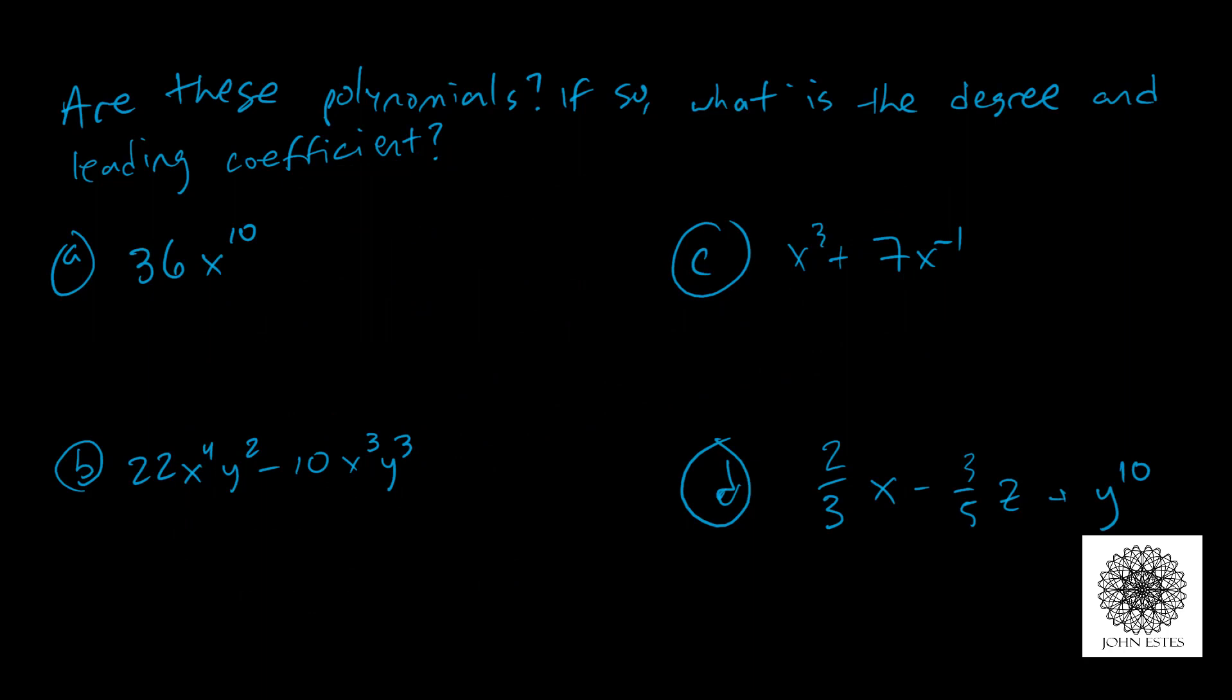Now I want to ask this question: are these polynomials, and if so, what is the degree and leading coefficient? For A, we have 36x to the 10th power. Is this a polynomial? Does it look like what we dealt with earlier? And the answer is yes. It only has one term in it, but that's okay. So that means my degree here is 10, and my leading coefficient, which I'm going to denote LC, is 36.